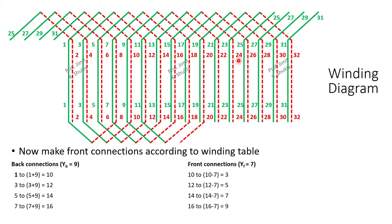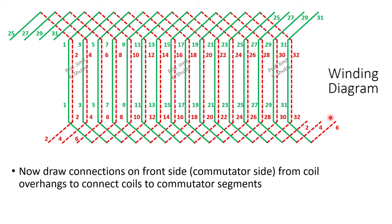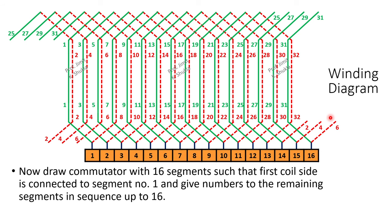We will make each and every connection as per the winding table. On the front side also, 27, 29 and 31 would be connected with 2, 4 and 6 to indicate the continuity of the winding. Now we will draw connections on the front side from coil overhangs to connect the coils to the commutator segments. Then we will draw the commutator with 16 segments such that the commutator segment connected with coil side 1 is given number 1, and so on.